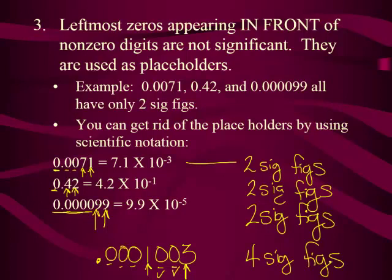Let's review. We've talked about non-zeros — they're significant. We've talked about zeros in between — that's the bookend rule, they count. And we've talked about zeros in the front — zeros in the front are not significant. There's only one type of zero left to discuss. We've talked about zeros in the front and zeros in between. What's the only thing left? Zeros in the back.